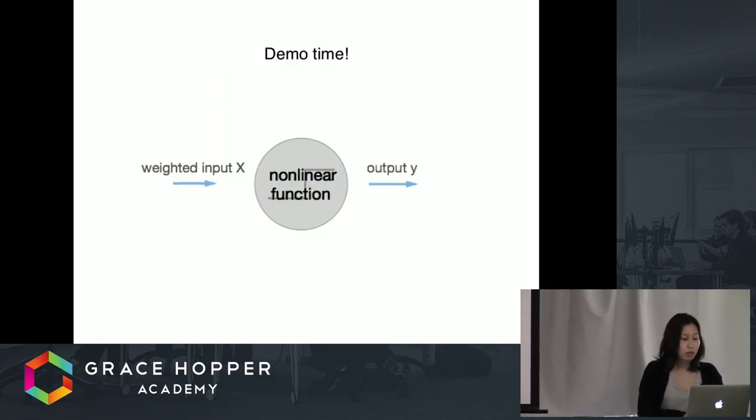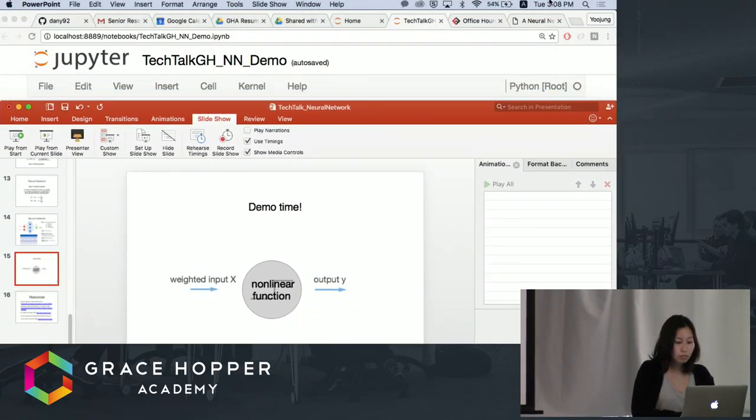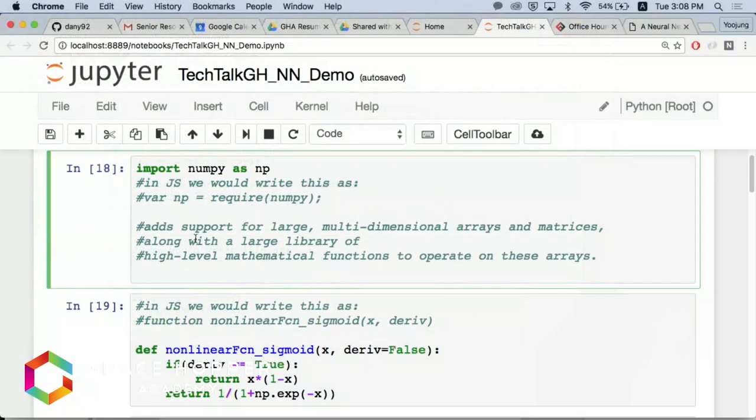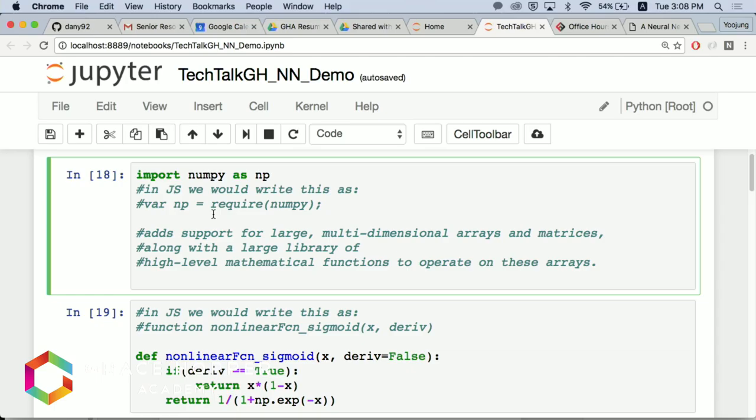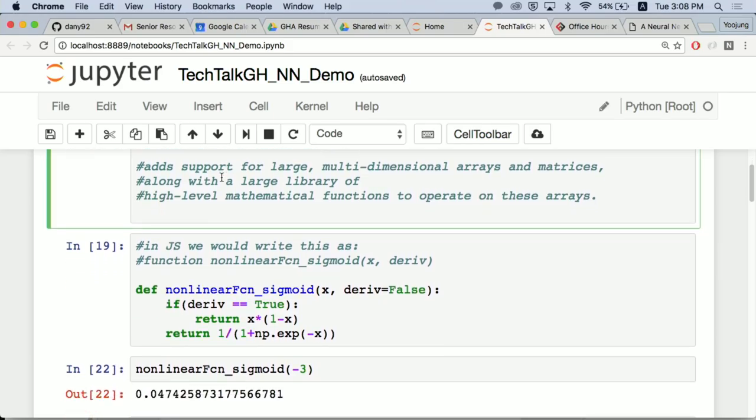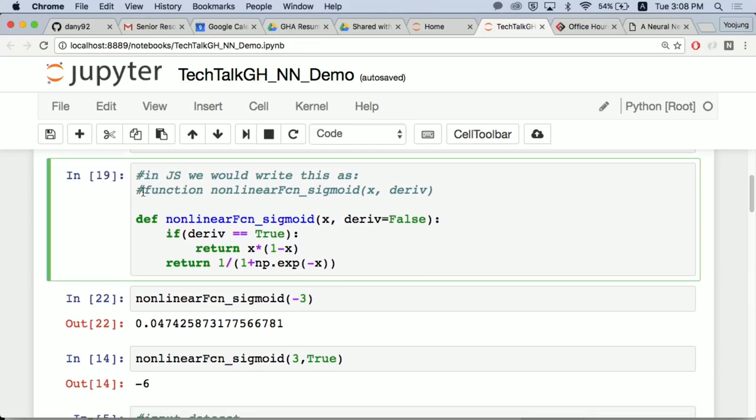So I'm going to do a demo now of a very basic two-layer neural network in Python. First, we're going to import numpy. Think of it as importing something like require.